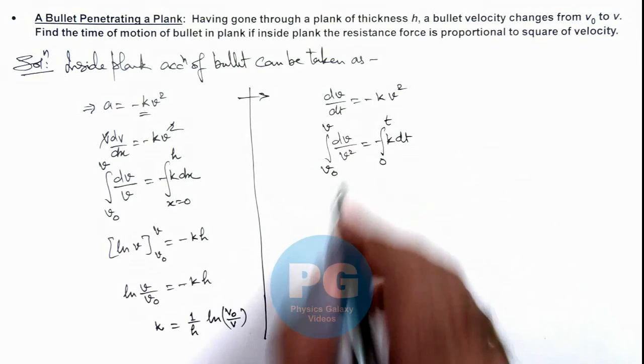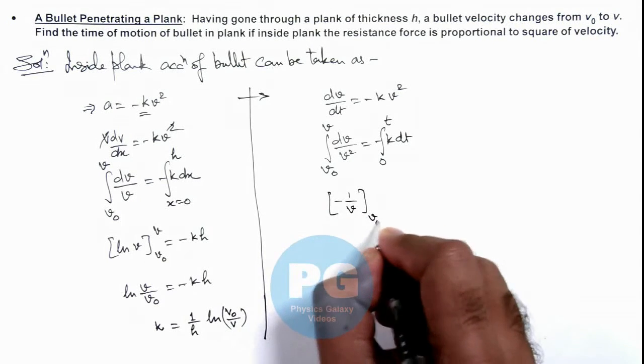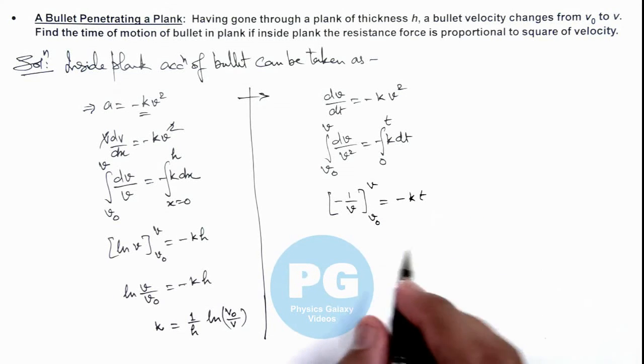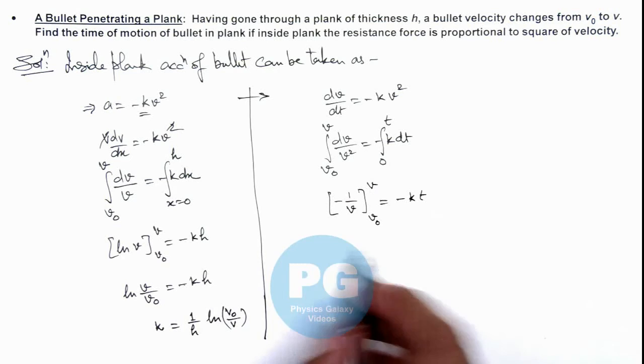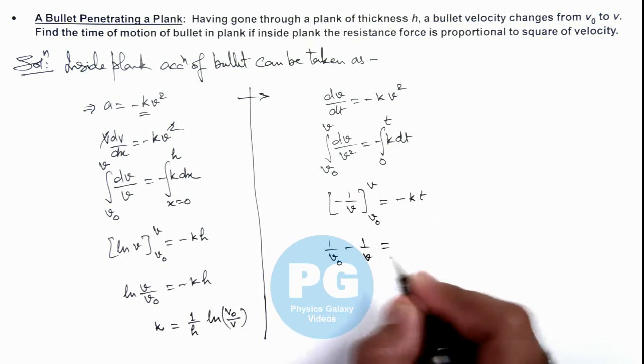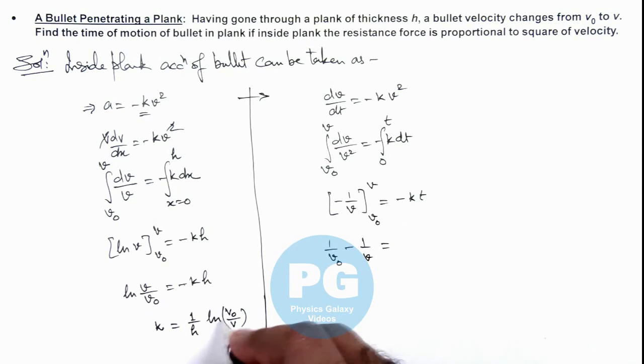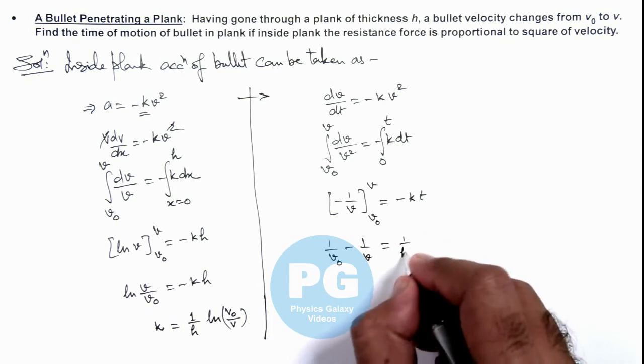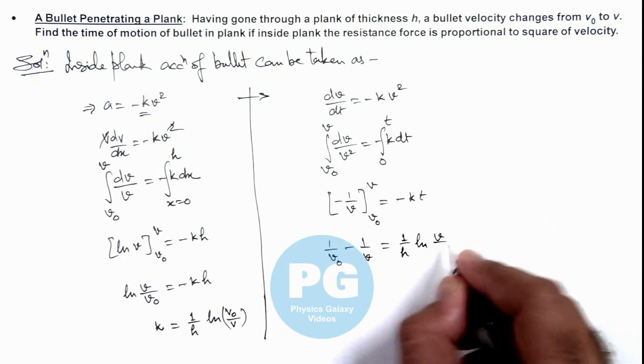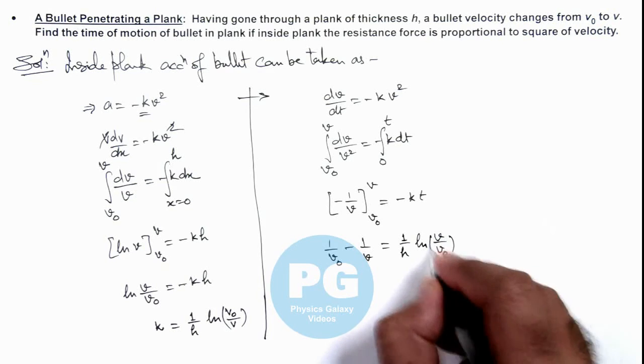then on integrating this it will give us -1/v with limits v₀ to v equals -kt. In this situation we substitute the limits: (1/v₀) - (1/v) = -kt. The value of k we can write as (1/h)ln(v/v₀), multiplied by t.